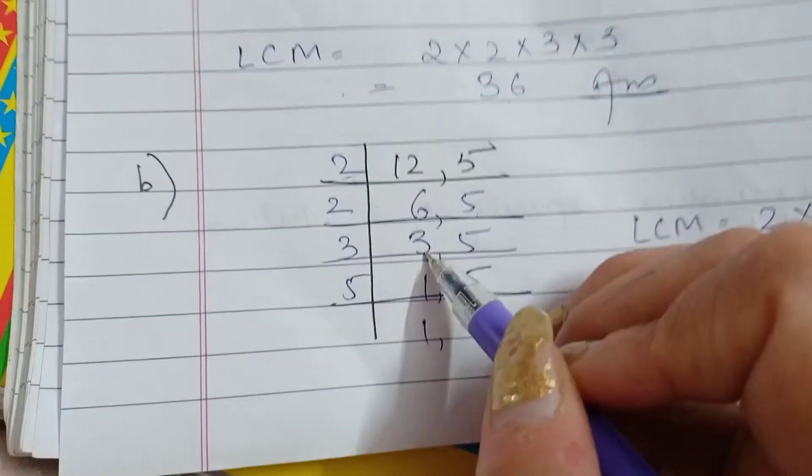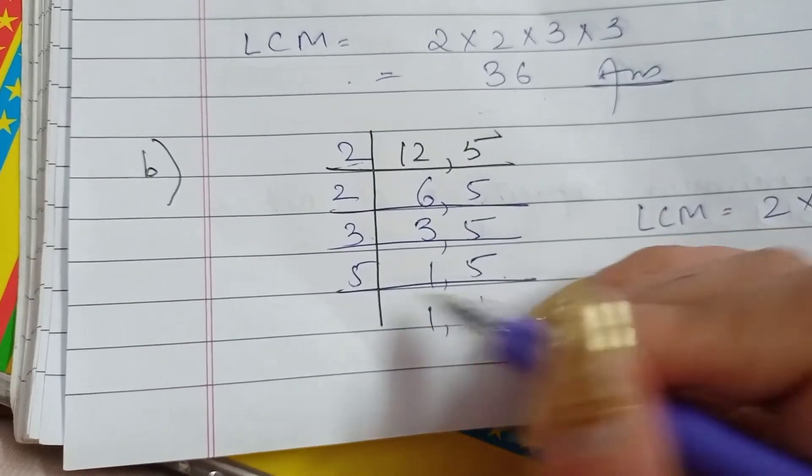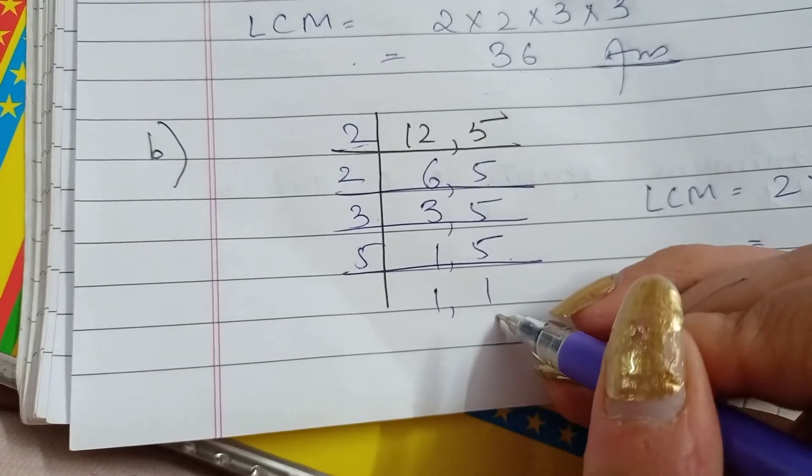5 is copied as it is. 2, 3 are 6. 5 is copied as it is. 3, 1 are 3. 5 is copied as it is. 5, 1 are 5. And we have got 1 here.